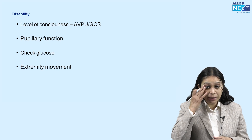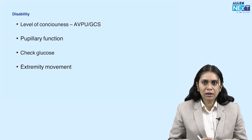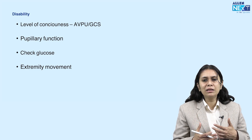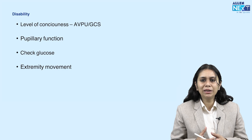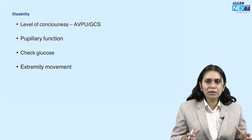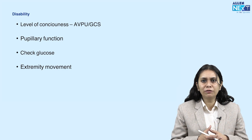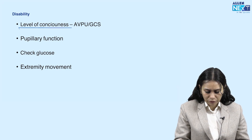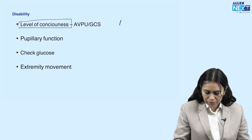Then comes D — disability. Disability means assessing the central nervous system. We assess the CNS to see how much impairment the life threats have caused to the brain and to diagnose neurological life threats.